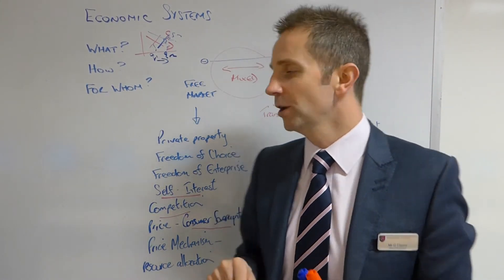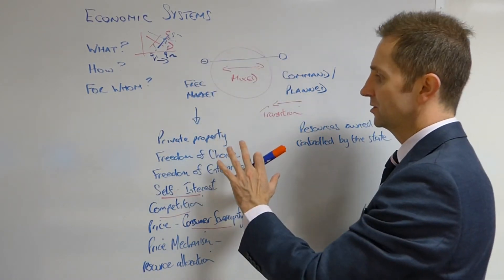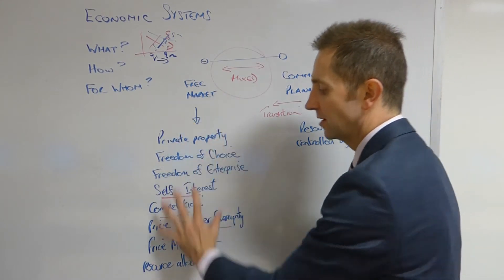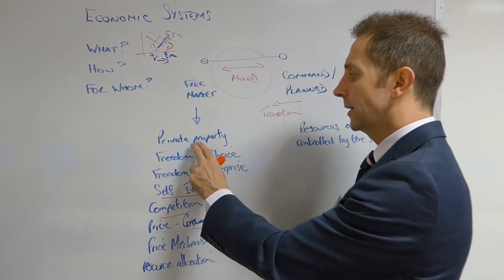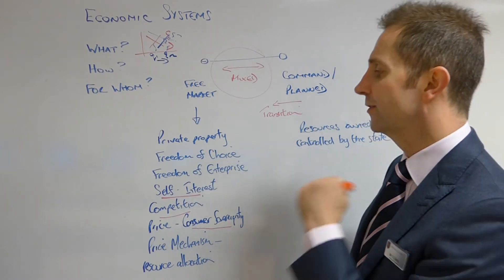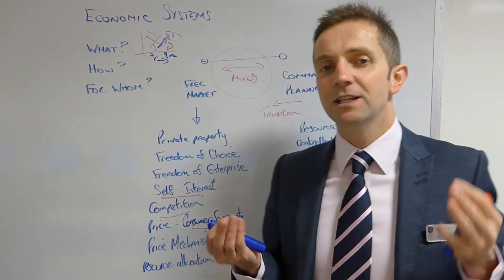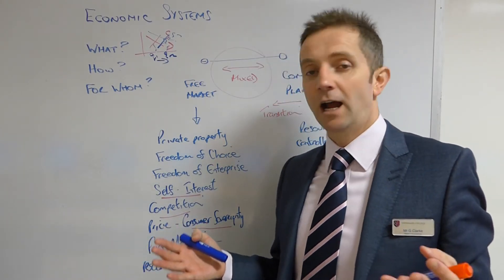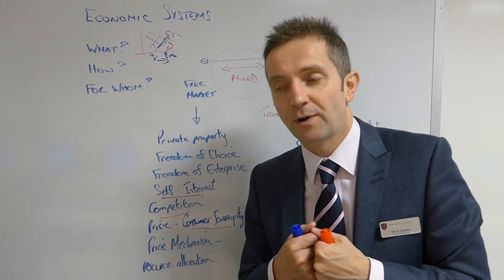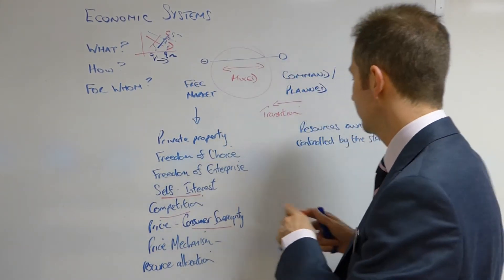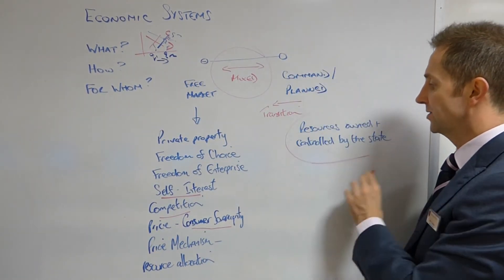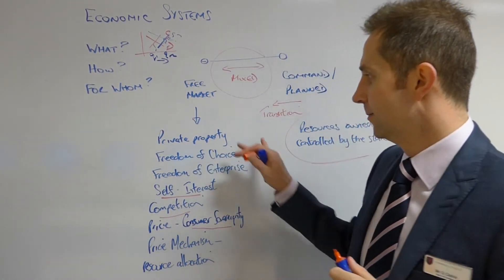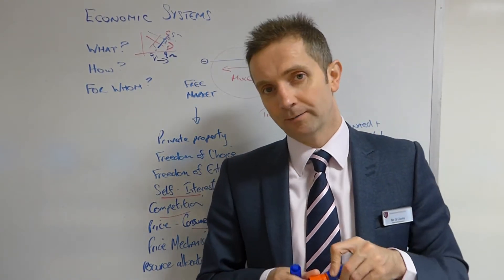Having established these things, let us now consider some of the characteristics of free market economies. First, private property. This means that individuals in a free market economy are allowed to own and control resources. Now, if you were in the command economic system, where resources are owned and controlled by the state, that's an absolute no. But in the free market system, you are allowed to do so.